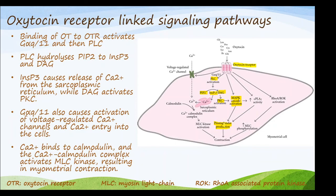Increased phospholipase A2 activity produces prostaglandin production. Both the MAP kinase activation and phospholipase A2 activity produce prostaglandins, resulting in contraction of the myometrial cell. Inositol triphosphate mobilizes intracellular calcium reserves, increasing calcium concentration. The oxytocin receptor also activates voltage-gated calcium channels, further increasing intracellular calcium. Calmodulin is activated by calcium, forming the calcium-calmodulin complex, which then activates myosin light chain kinase, causing contraction.